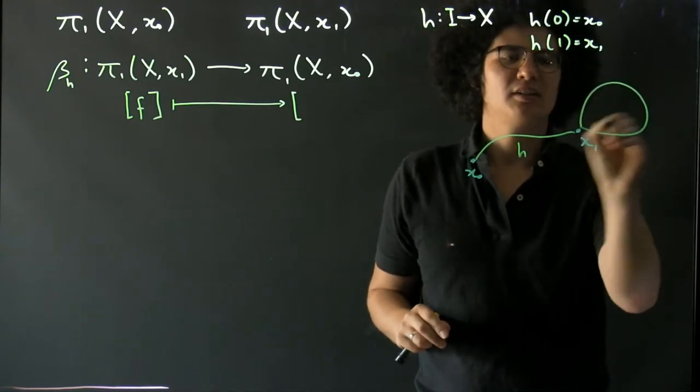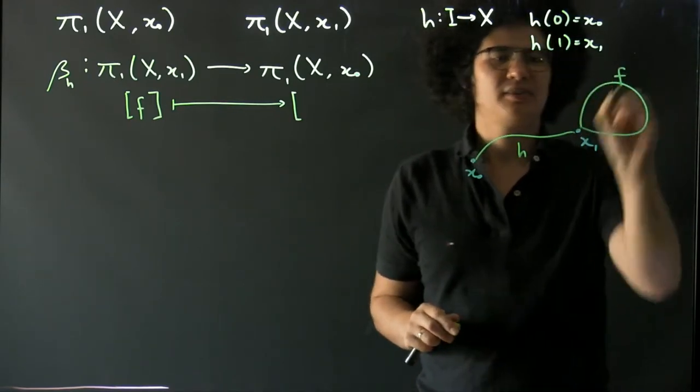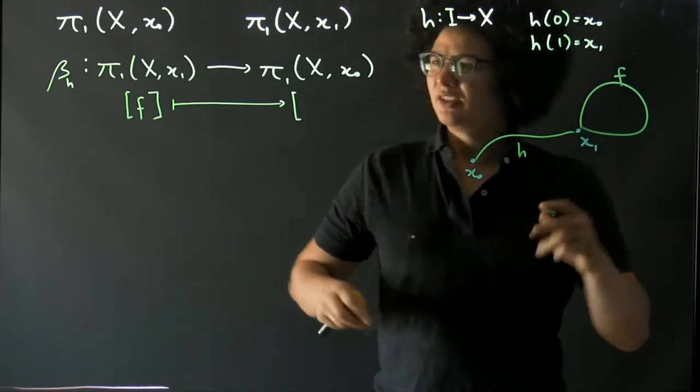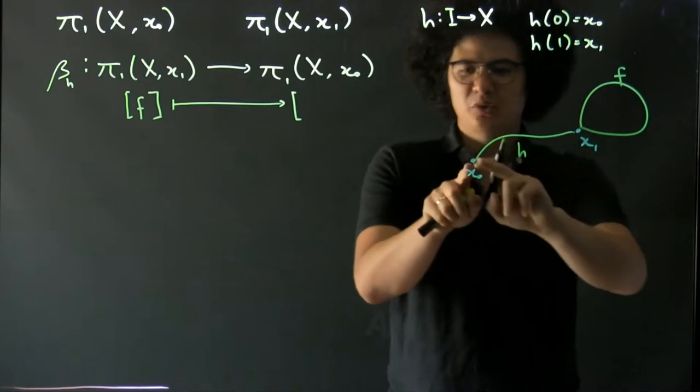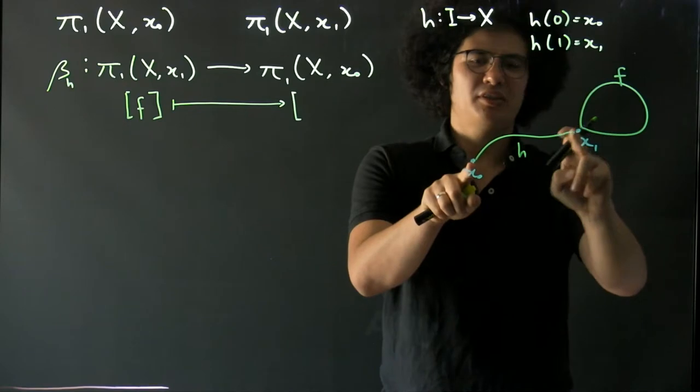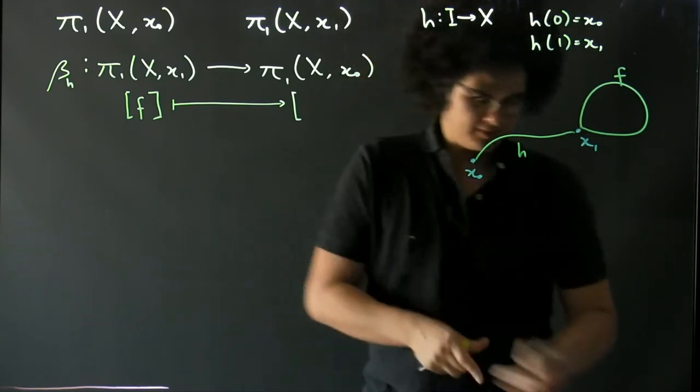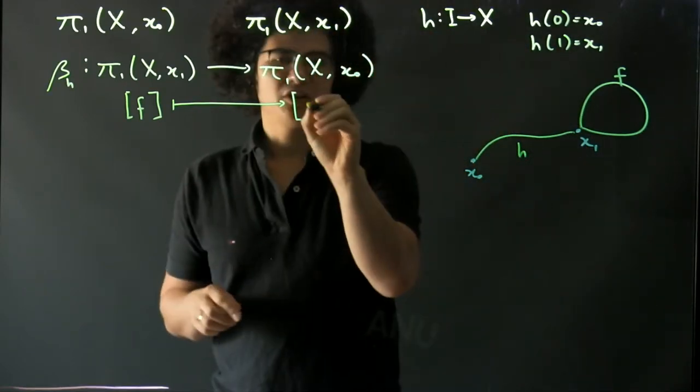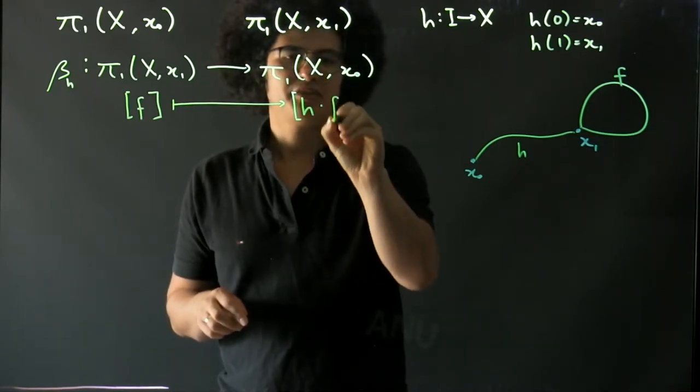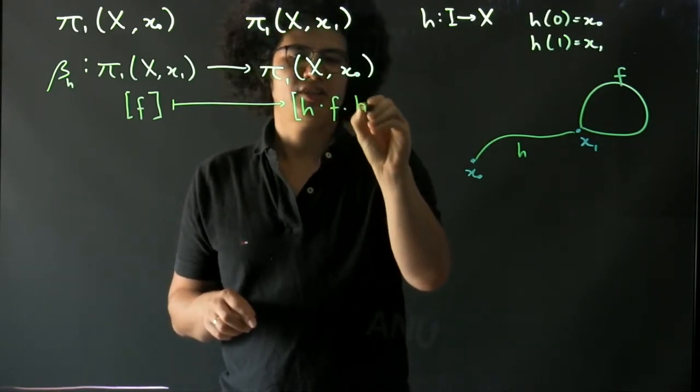So what we do to turn this loop into a loop at x₀ is we go along h, then f, then h inverse. So we're going to go along h, then f, then h inverse.